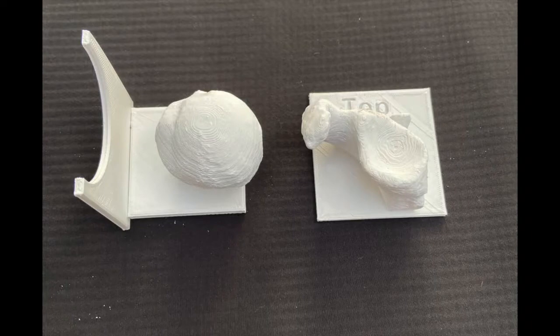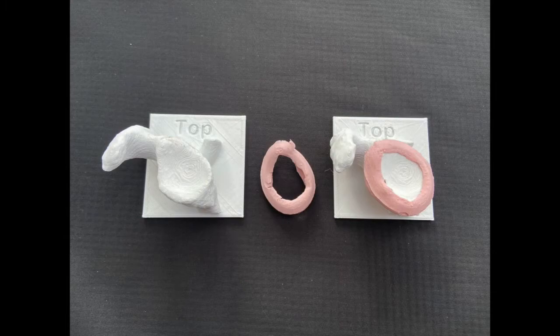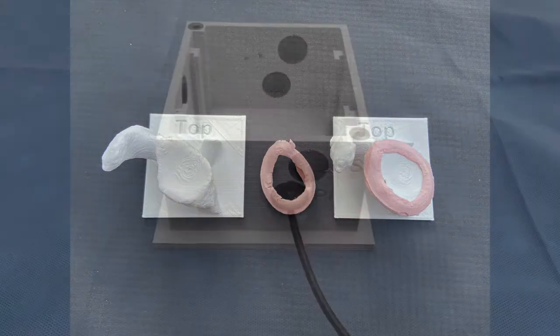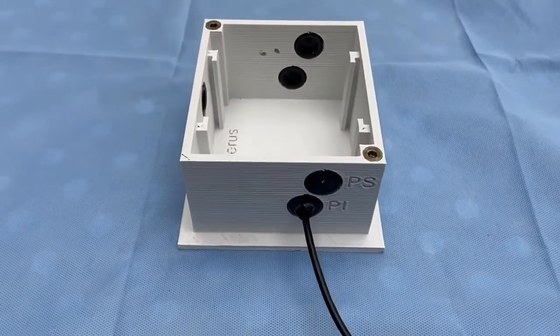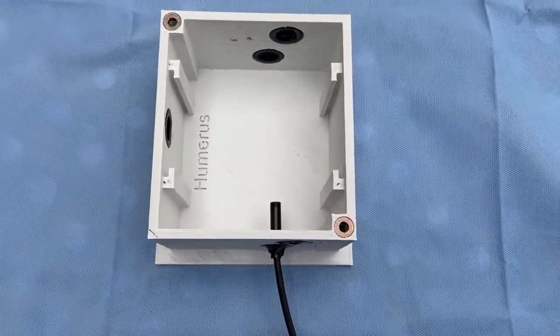Removable humeral and glenoid components were printed, and a mold was made enabling the creation of a separate latex glenoid labrum. A number of portals were made in the box to allow an arthroscopic or USB camera to be introduced.